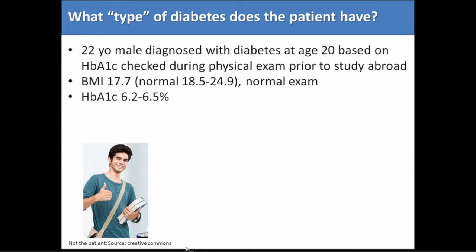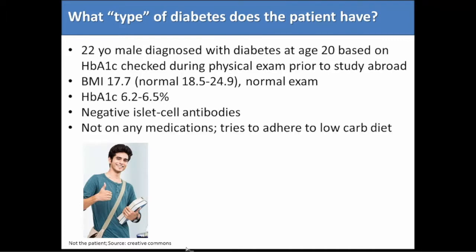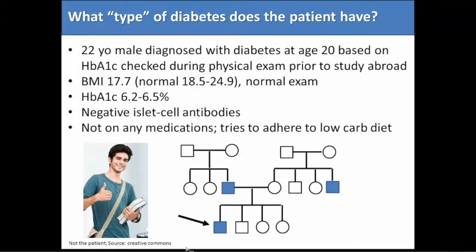You might think: a young, lean guy diagnosed with diabetes — could this be type 1? But he actually had negative islet-cell antibodies. He was not on any medications with that hemoglobin A1C of 6.5%, but was working really hard to adhere to a low-carb diet and was concerned about why this was happening to him. In speaking to him about his family, it turned out his father was diagnosed with diabetes in his 40s and he had a maternal uncle diagnosed in his 50s.